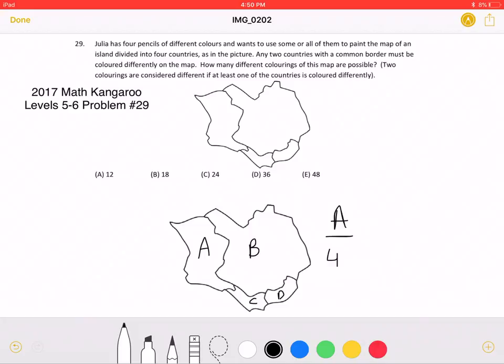However, as stated in the problem, two countries at your border cannot have the same color. Therefore, there are three possible choices for B and two choices for C.